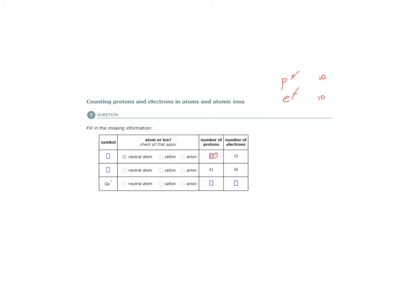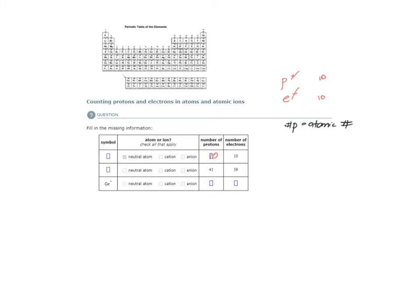Remember, the number of protons is equal to the atomic number. So I'm looking for the element that has atomic number 10. If I check my periodic table, that appears to be neon. So its element symbol is Ne. Let's look at the next one.